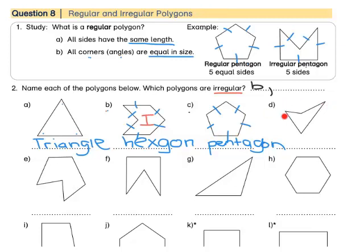For D, this is a funny-looking shape. Let's count the sides: 1, 2, 3, 4. Four sides means that it's a quadrilateral. This one here is definitely irregular — the sides are different lengths, and the angles are also different sizes. Therefore, D is also irregular.